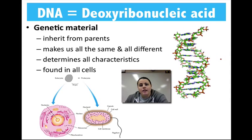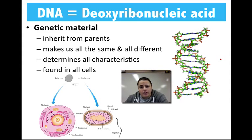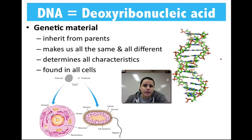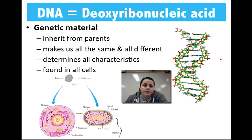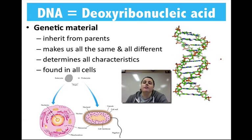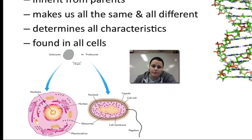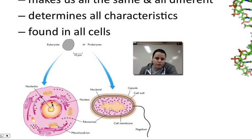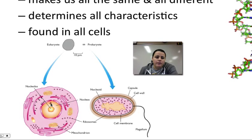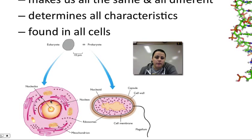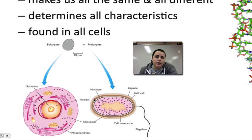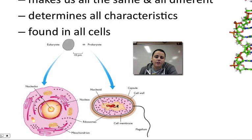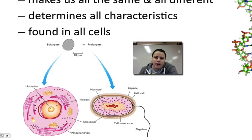DNA is also a characteristic of all living things. No matter if you're a prokaryotic cell or a eukaryotic organism, your cells contain DNA. But if you're a eukaryotic organism, which we are and we're going to focus on, your DNA is located in the nucleus. But if you're prokaryotic and you don't have a nucleus, it just kind of hangs out in a region called the nucleoid region instead.